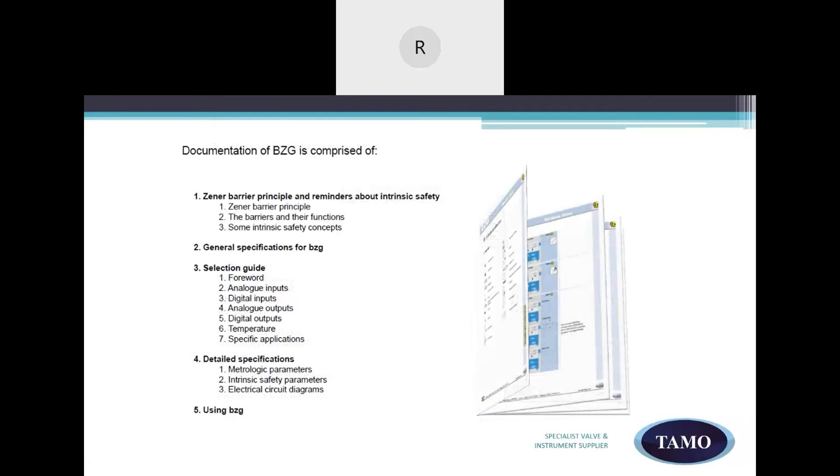The Georgian BZG selection guide is available covering data on inputs and outputs and detailed reference circuits on specific applications. Detailed specifications on metrological parameters, intrinsically safe parameters and electrical circuit diagrams are available for all models.